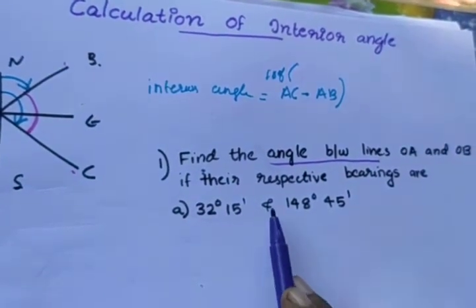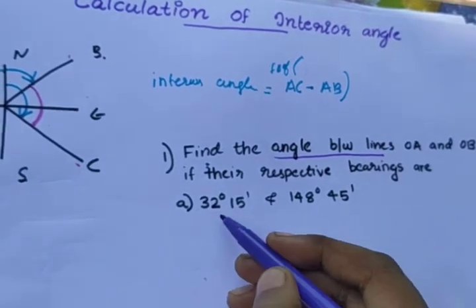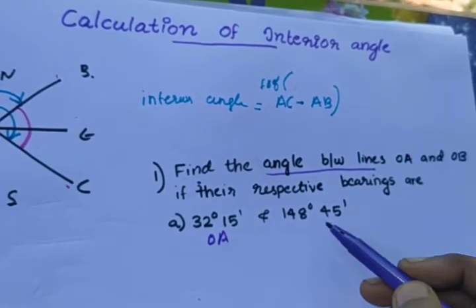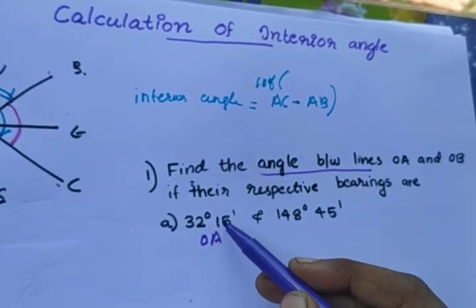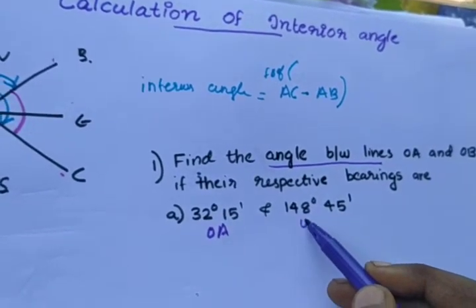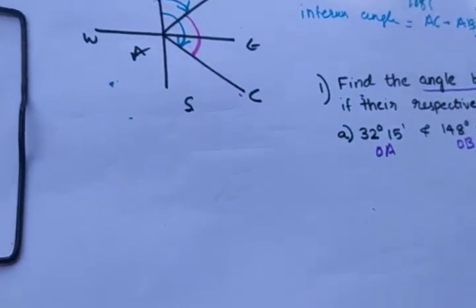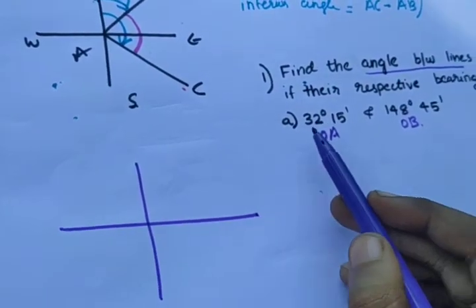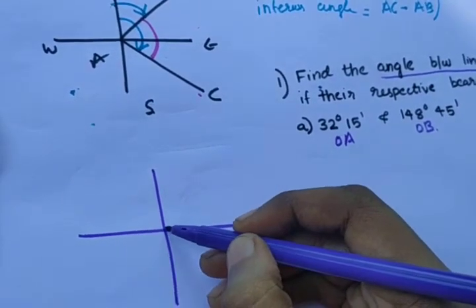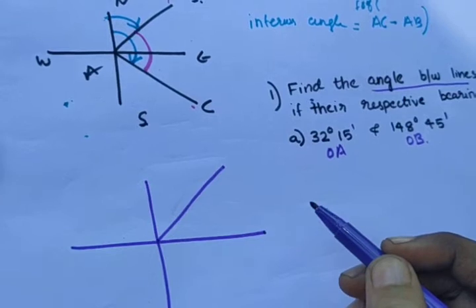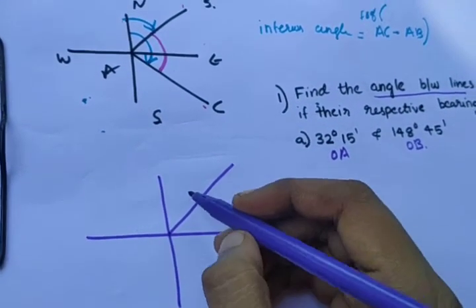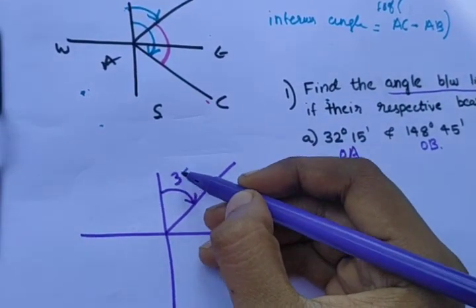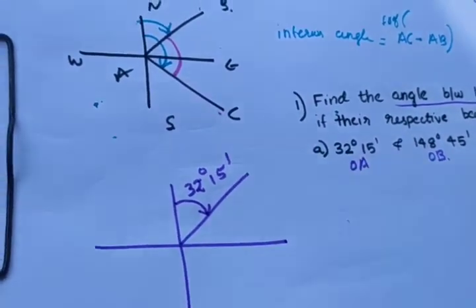One line is OA. What are the respective bearings? OA is 32 degrees 15 minutes. OB is 48 degrees 45 minutes. I take OA and OB. OA is 32 degrees 15 minutes — it's in the first quarter, not 90 degrees. It's a forebearing of 32 degrees 15 minutes. This is OA.